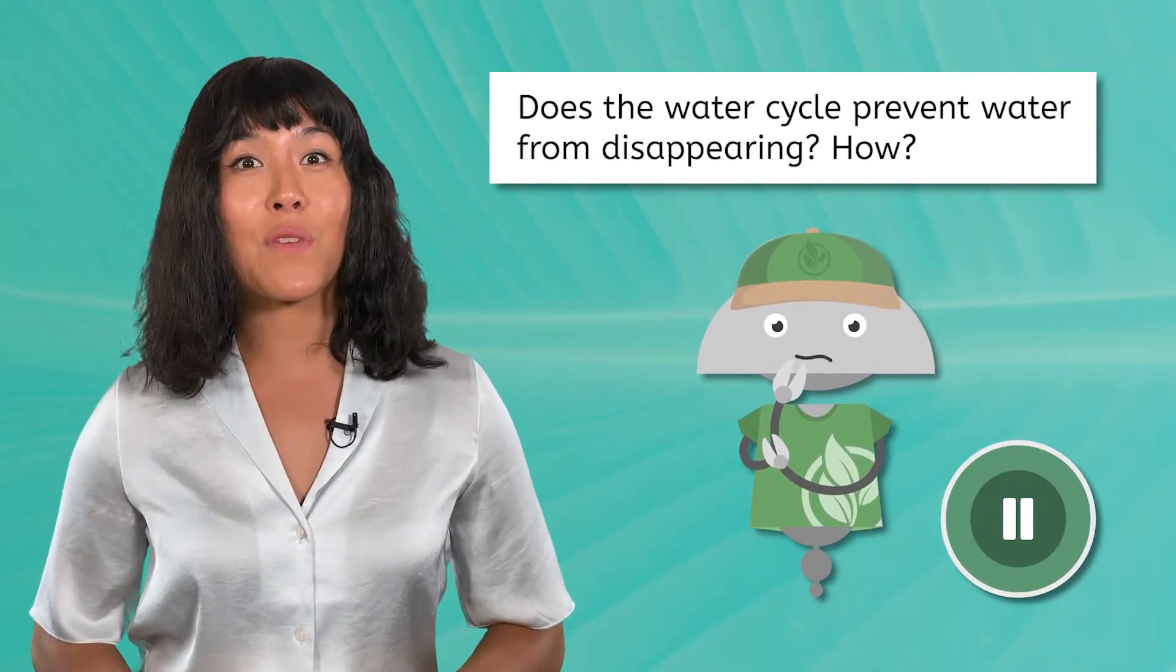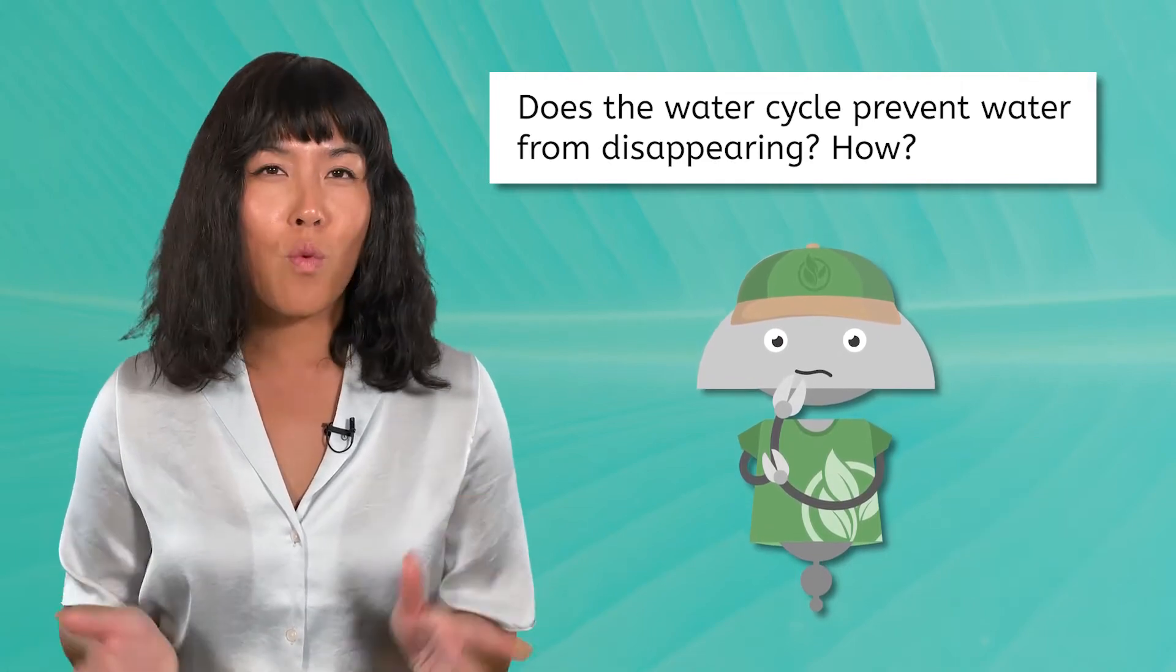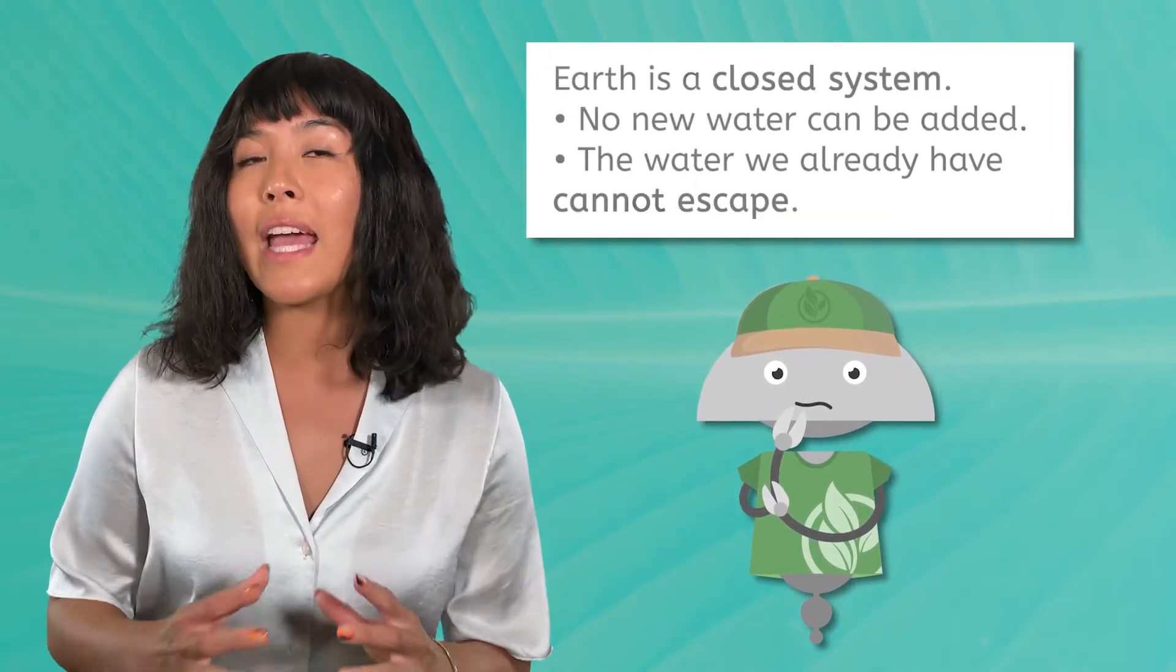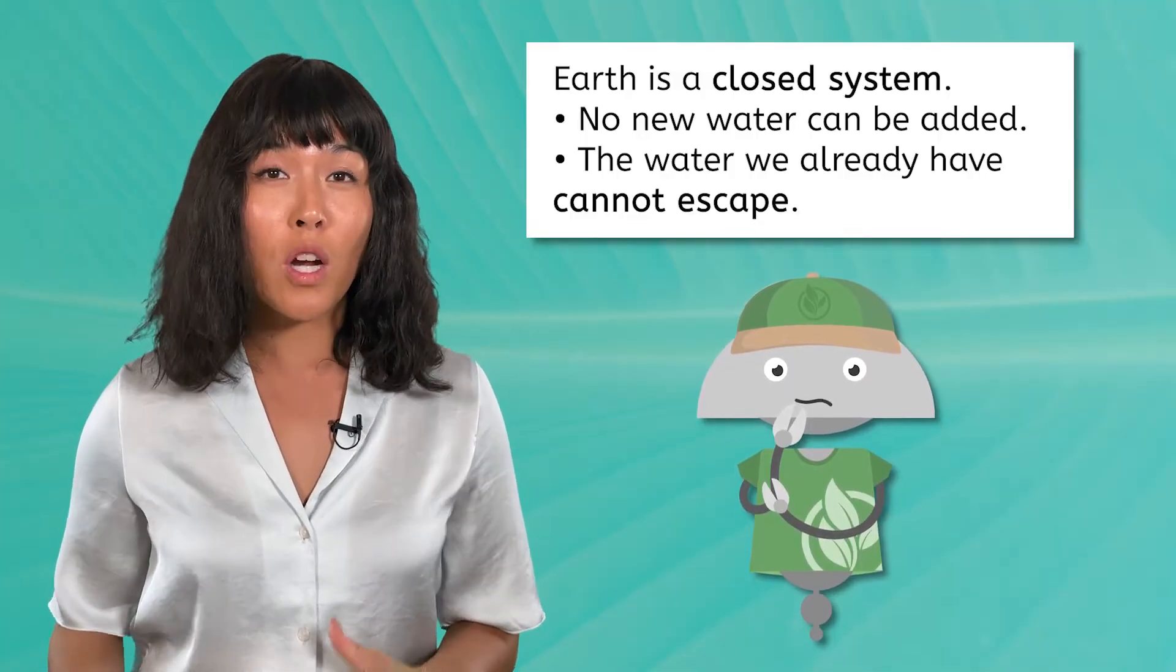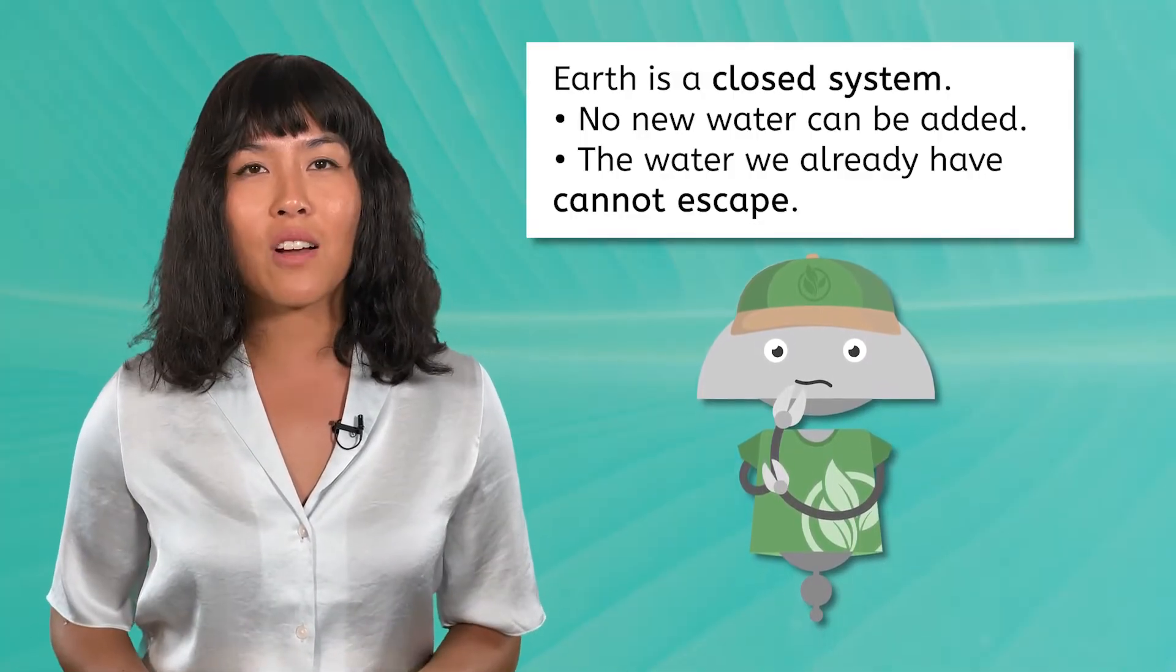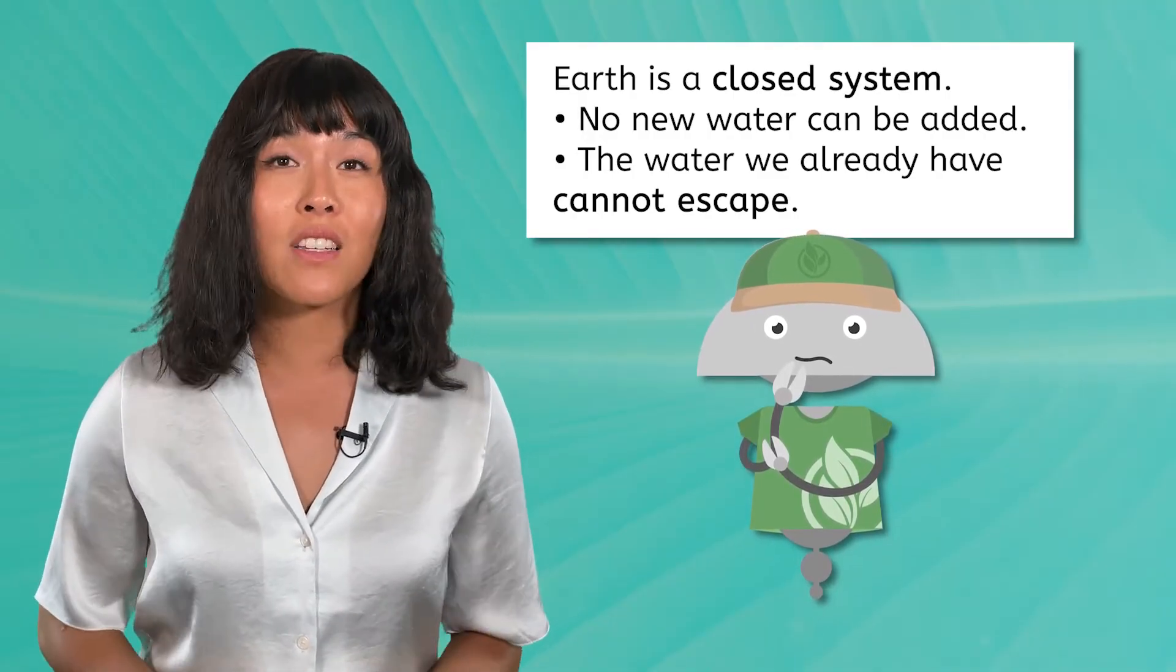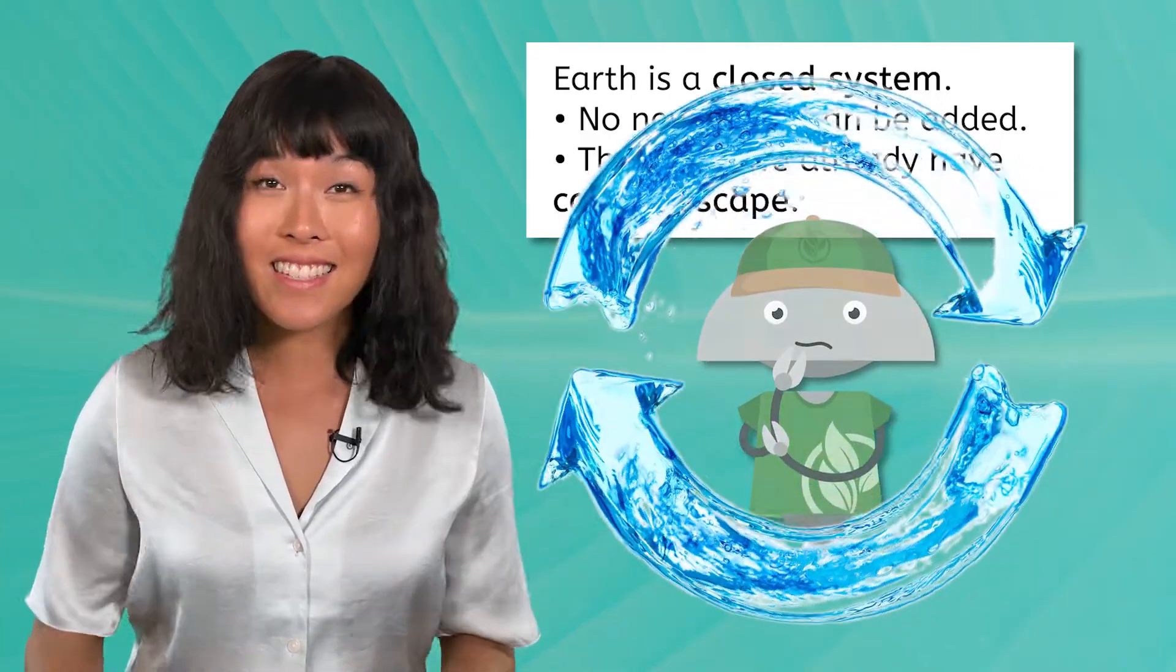So Mia, are you still worried that the water is disappearing? What did you learn about the water cycle? Scientists, pause the video for a moment and record your thoughts as well. What did you decide? Will the water cycle save us from permanently drying out? Remember that the Earth being a closed system means that no new water is coming, but it also means that the water we have isn't going anywhere. At least, it's not going too far. Water that evaporates will eventually fall back to the ground as precipitation somewhere. It's an endless cycle.